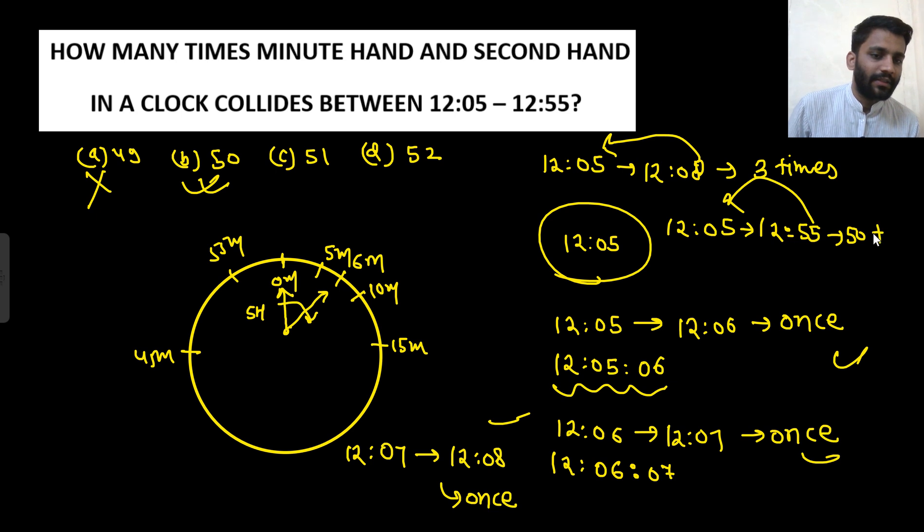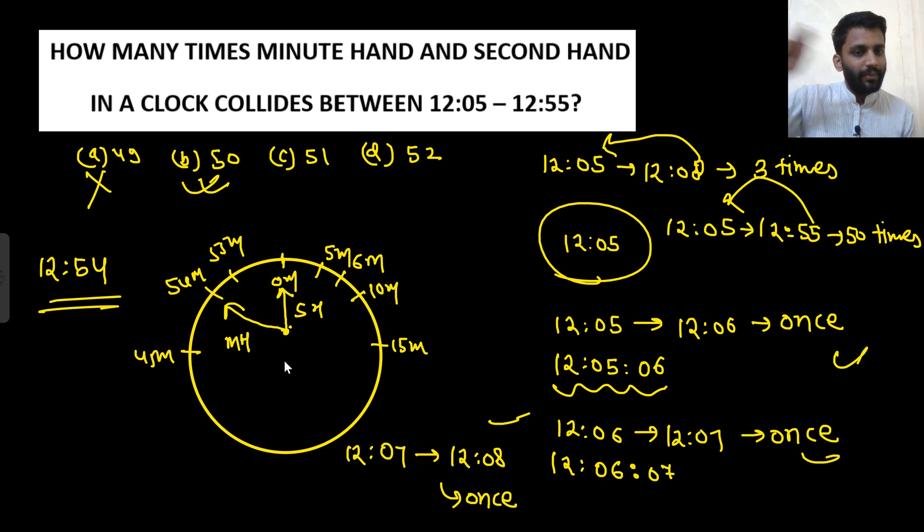Some guys may have confusion about what will happen at 12:54. Let's check at time 12:54. At 12:54, my minute hand will be at 54 and second hand will be at 0.